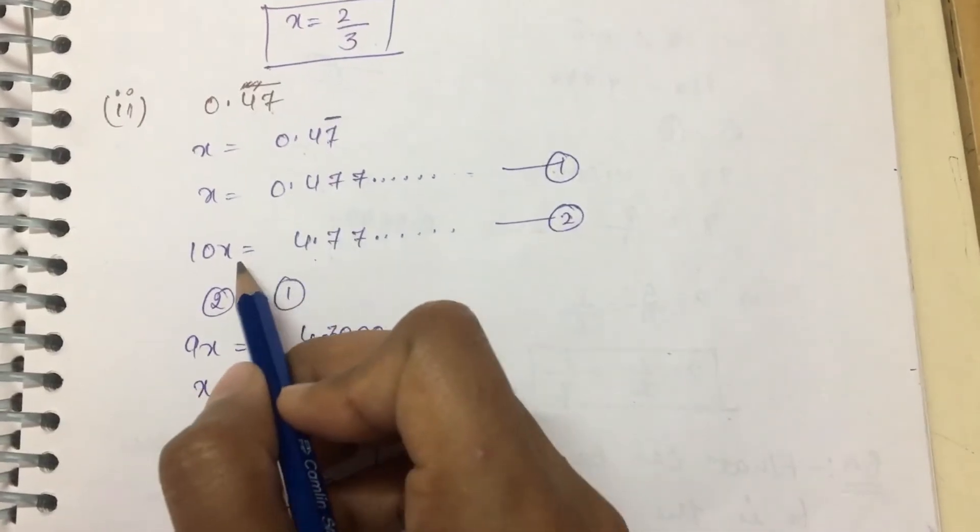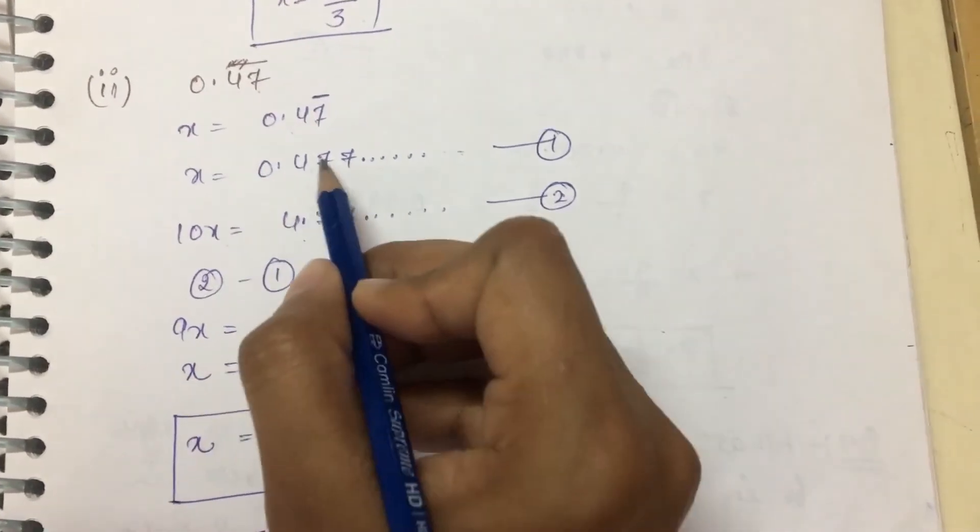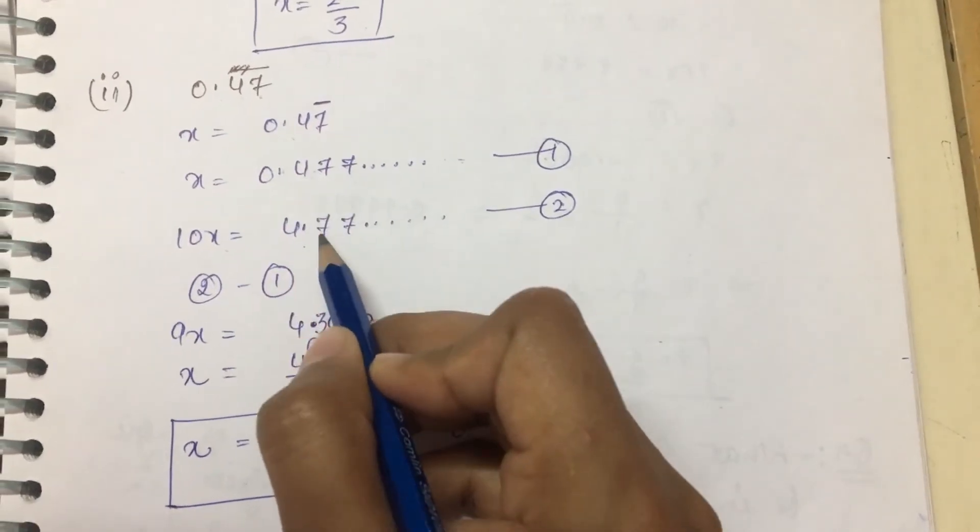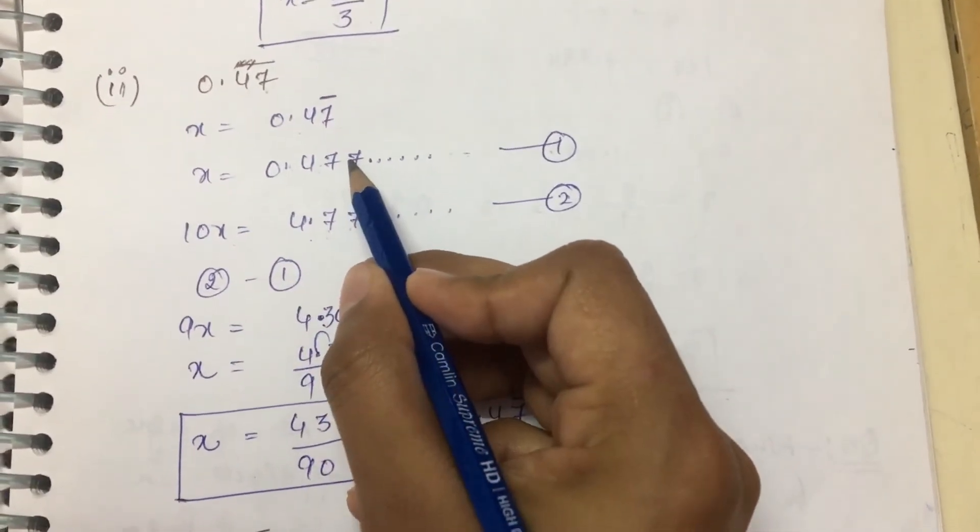Now with 1 digit repeating, multiply by 10. So the decimal will move and come after the 4. This is the second equation.